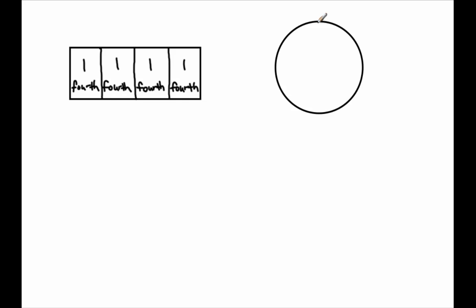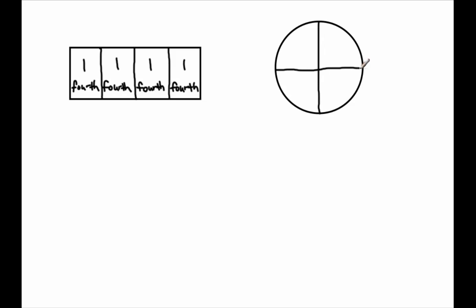To partition a circle into fourths, I'm going to draw a line going straight down the middle, and I'm going to draw a line going straight across the middle. Let me draw that one more time just for accuracy and precision. There we go. How many shares do I have? One, two, three, four shares. The whole is the circle.